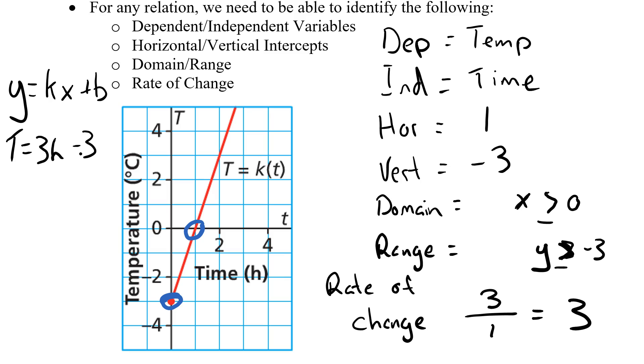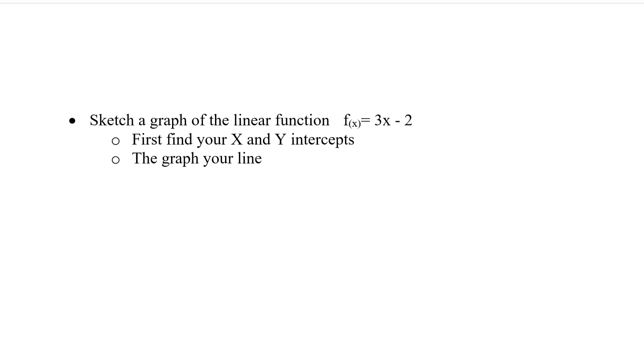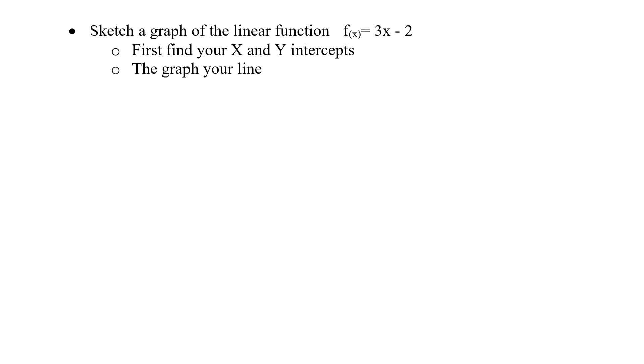Okay, let's move on. We've got the information from a graph. Now let's take our function and graph it. So sketch the graph of a linear relation, f(x) equals 3x minus 2. So how do we do this? Essentially we're going to find our x and our y-intercept.